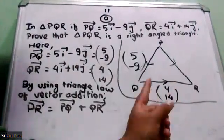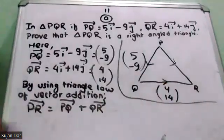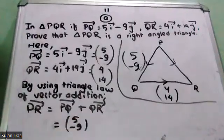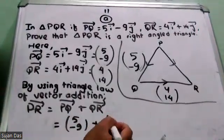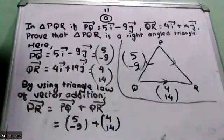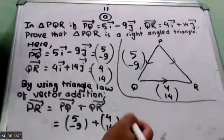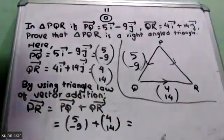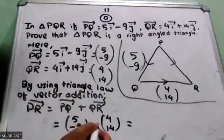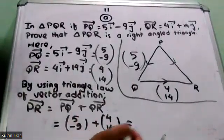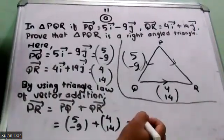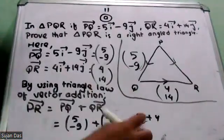PQ plus QR, by angle law. So what is PQ? 5 minus 9, okay? Plus QR, that is 4, 14. Now add the vectors — class 3 vector addition: mathiko plus mathiko. 5 plus 4 equals 9. Minus 9 plus 14.